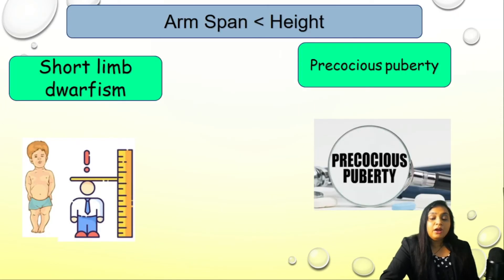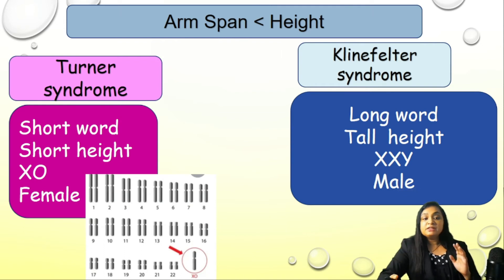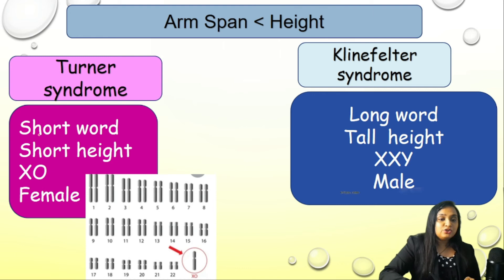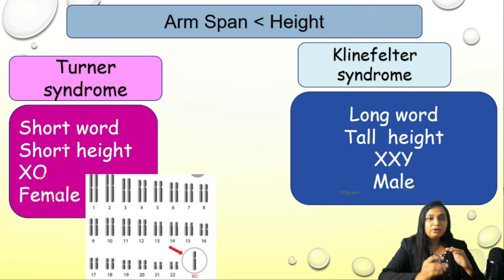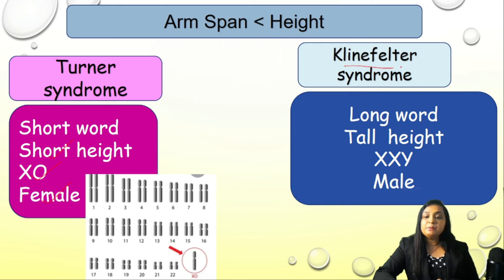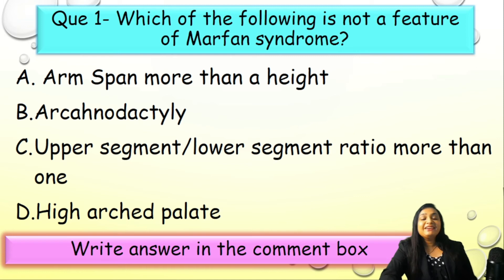When arm span is less than height, it could be part of short limb dwarfism or precocious puberty. To avoid confusion between Klinefelter and Turner syndrome: Turner is a shorter word — short height, only one X, seen in females. Klinefelter is a longer word — tall height, XXY chromosomes, seen in males. This is an easy way to remember the difference.